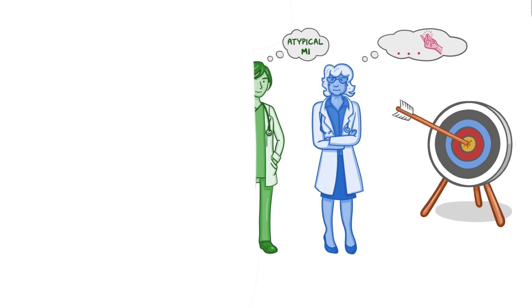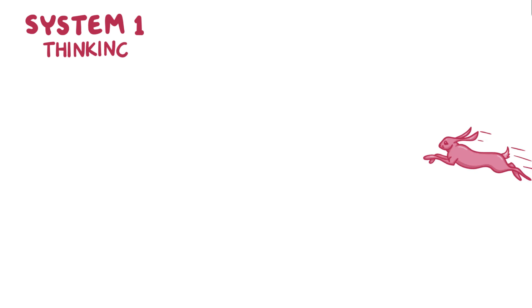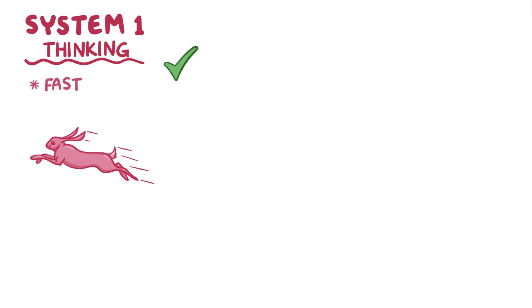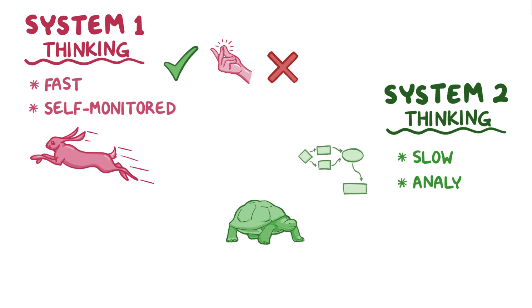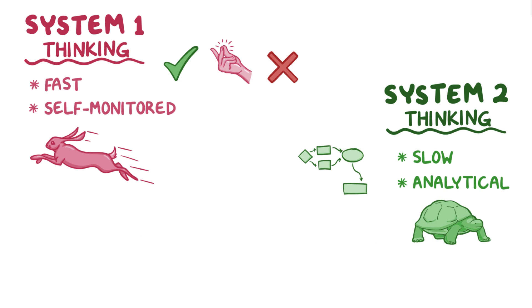Alright, as a quick recap. While System 1 thinking is fast and often correct, it needs to be self-monitored. It can make snap errors as quickly as it makes correct diagnoses. System 2 thinking is slow and analytical, and it can help to avoid mistakes made by System 1.